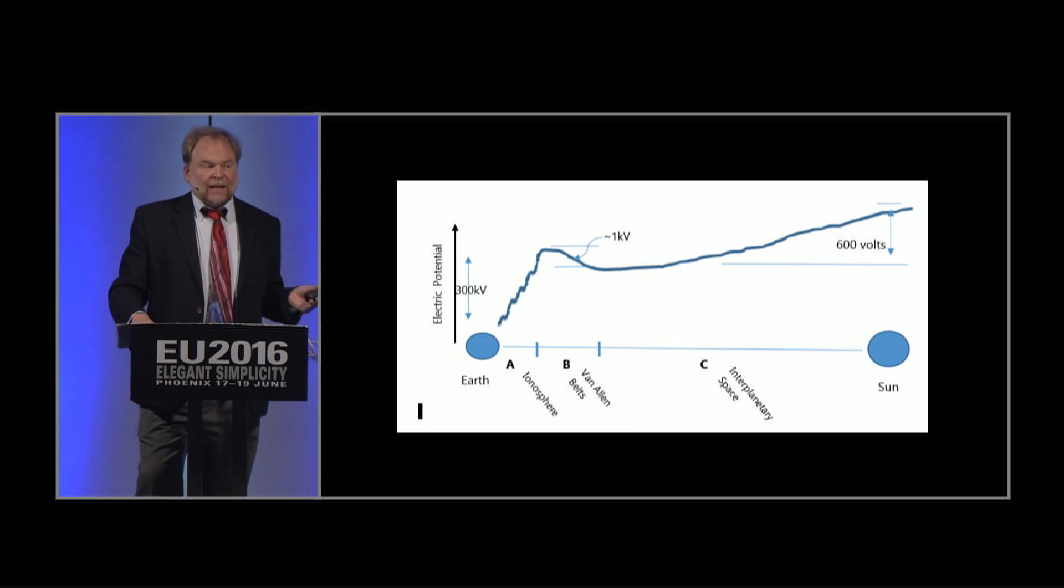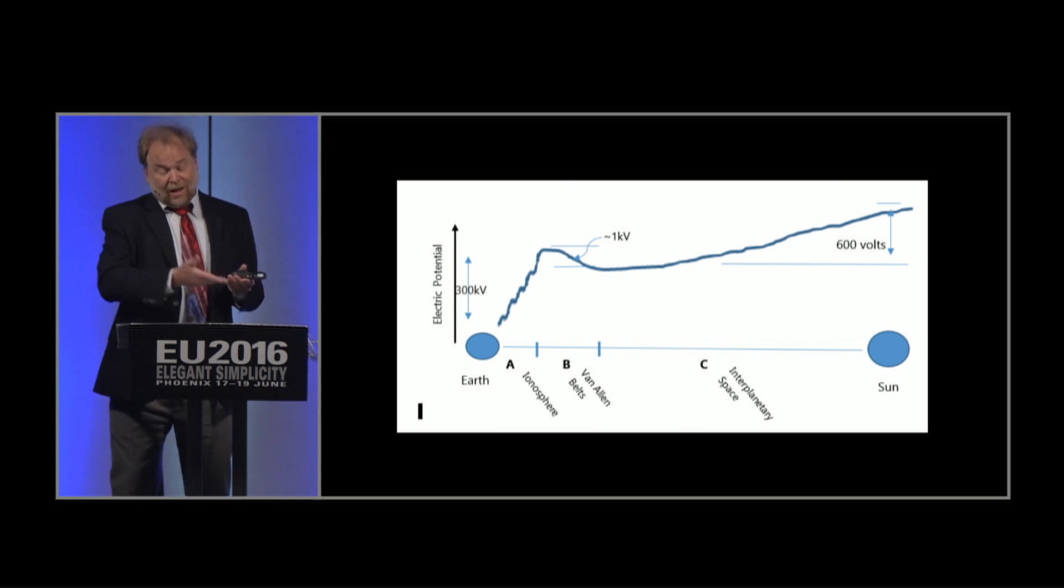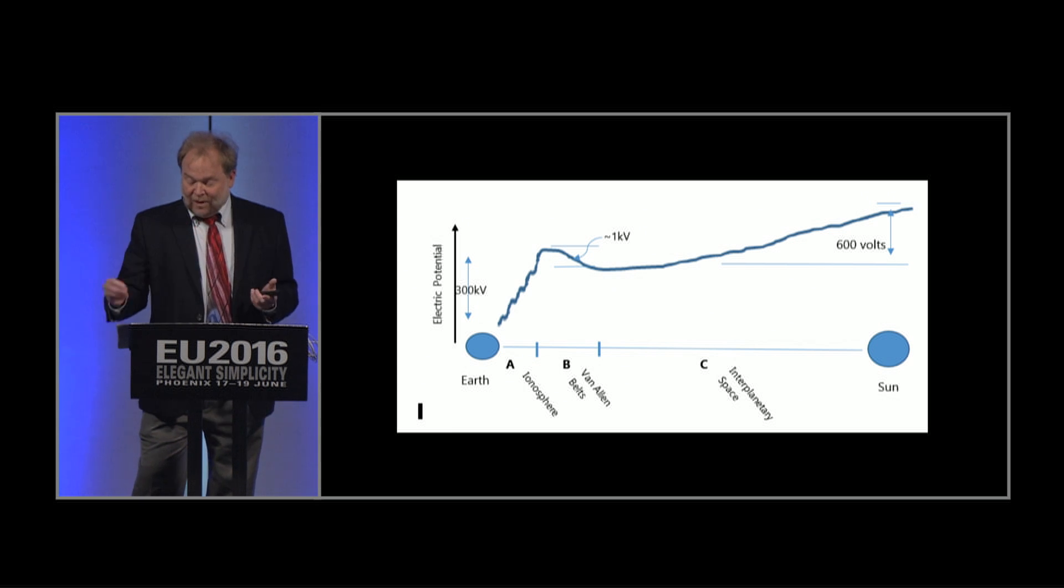And I got this graph by looking at data in the laboratory, and listening to people like Wal and Don and others. I didn't create this graph initially by looking at any NASA data. I didn't create it by reading any publications about electrical environment between planets and stars. And then I took that graph, and then I went to the literature and said, does the literature support my model? And I just talked through the ways in which it does.